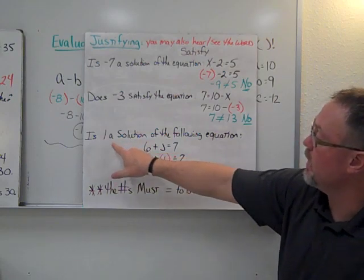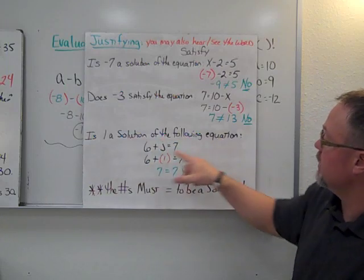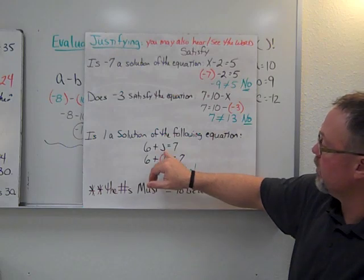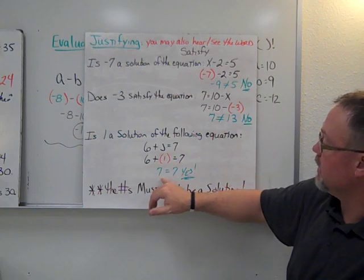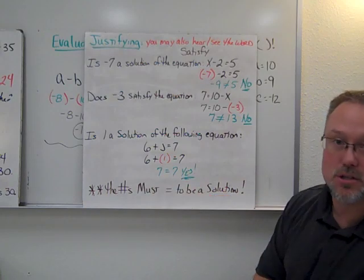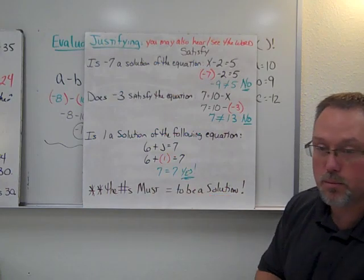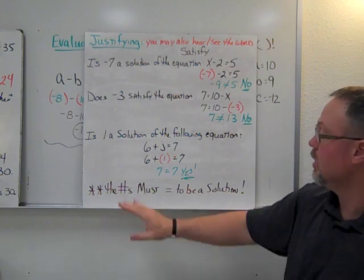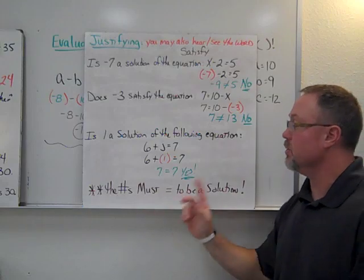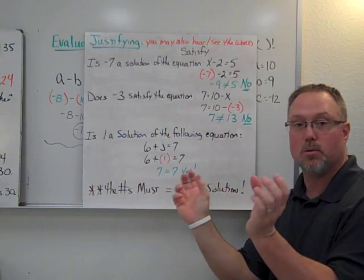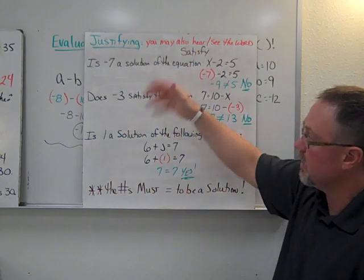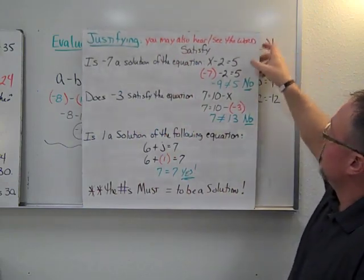'Is 1 a solution of the following equation?' — insert 1 for the variable, simplify, and yes, both sides equal each other. So the answer is yes, 1 is a solution. The biggest thing when justifying is that the numbers must equal at the end when you finish the process.